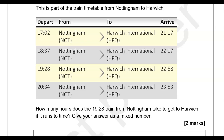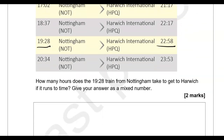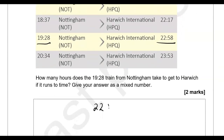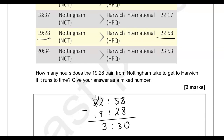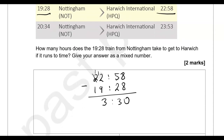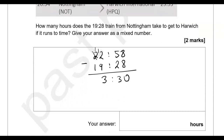How many hours does the 19:28 train from Nottingham take to get to Harwich if it runs to time? Give your answer as a mixed number. The train arrives at Harwich International at 22:58. So 22:58 take away 19:28 gives us 3 hours and 30 minutes. Written as a mixed number, that is 3 and a half.